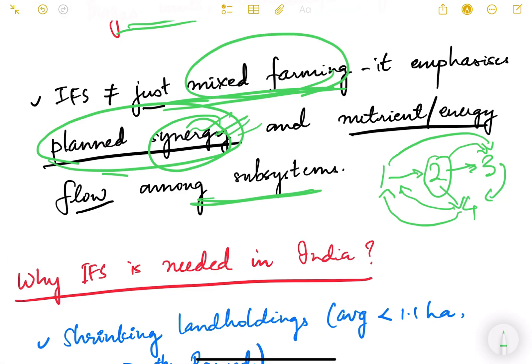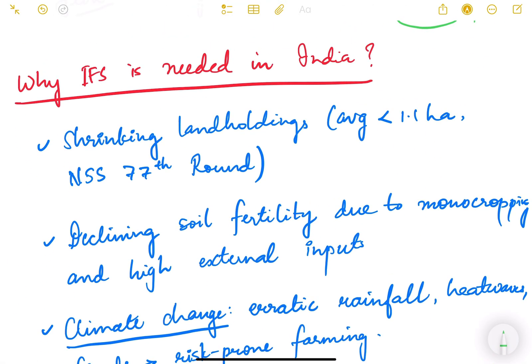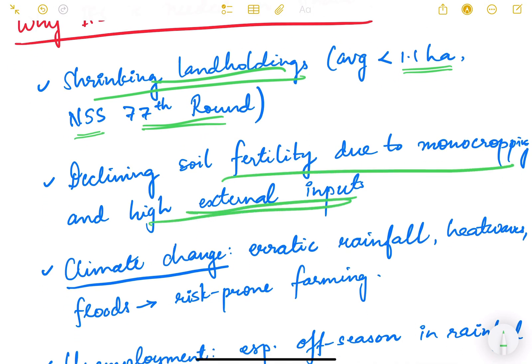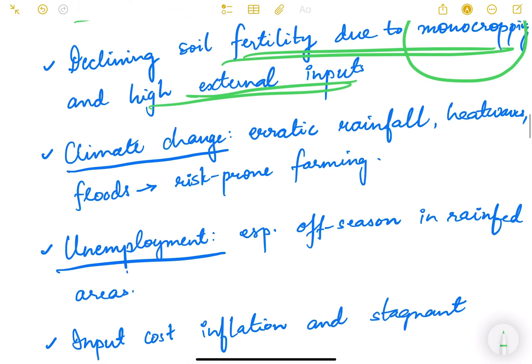Why is IFS needed in India? We have shrinking land holdings. The average land holding in India is less than 1.1 hectare as per the NSS 77th round. Declining soil fertility due to monocropping and high external inputs. Climate change - erratic rainfall, heat waves, floods - there is risk-prone farming. If one crop fails, the entire livelihood will fail, so we should have diversified agriculture.